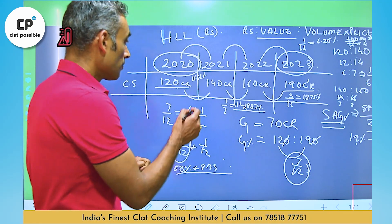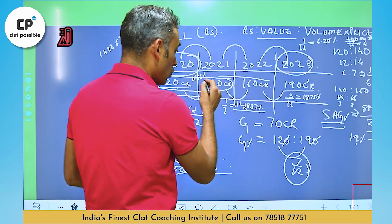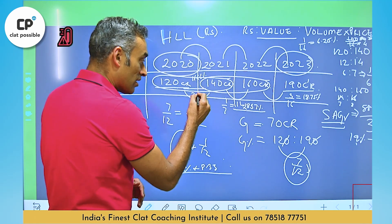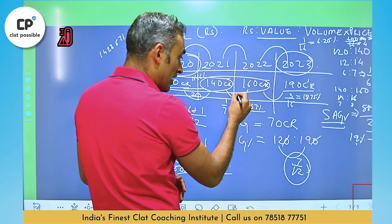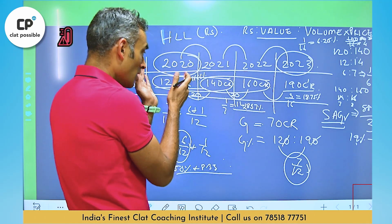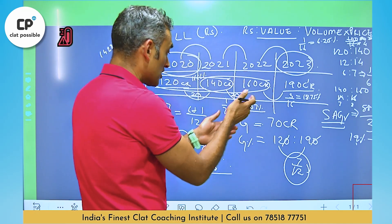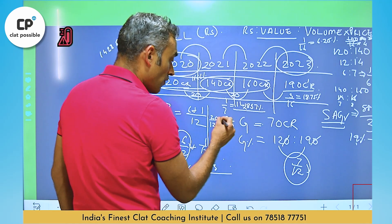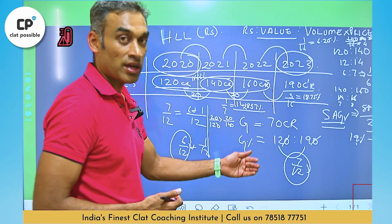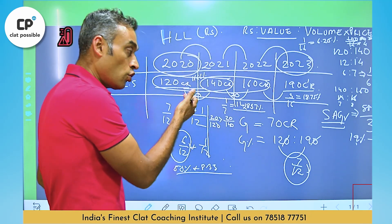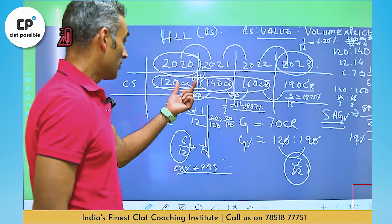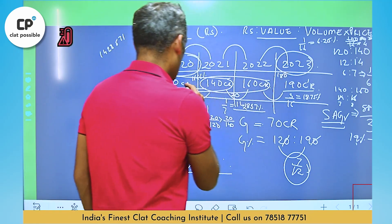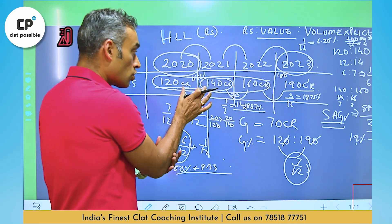There's a shortcut here: from 120 to 140 and 140 to 160, both have an absolute increase of 20. But 20 upon 120 is always greater than 20 upon 140 because we're dividing by a larger denominator in the second case. So whenever there is a fixed absolute growth, the period with the lower base will always have a higher growth rate — no calculation needed. Had the values been 120, 140, 160, 180, you could say directly that the first period has the highest growth rate.